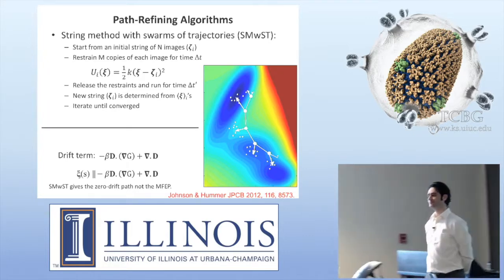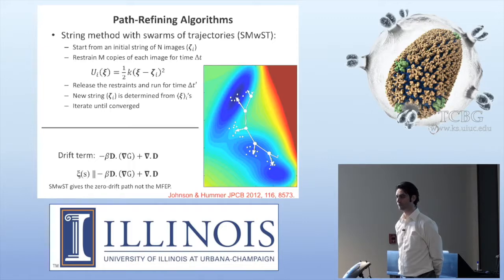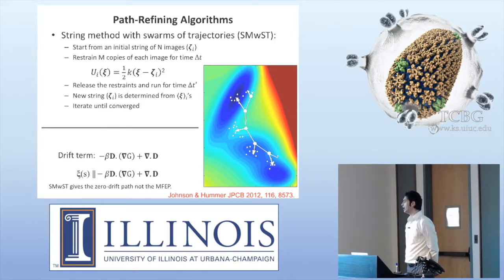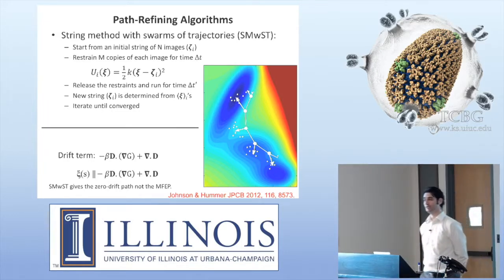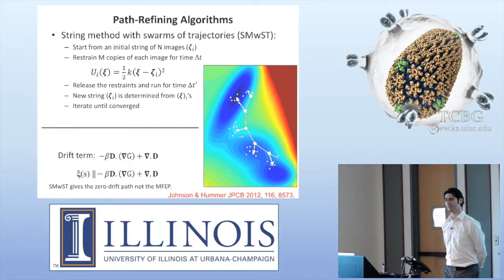Whether it's the most interesting path, the most probable path, or the minimum free energy path — if you look at the potential of mean force calculated along this path, at the top of the barrier you should get one path, you should see isocommittor surfaces. But I actually argue that you wouldn't, if you are using the string method with swarms. I can show that you wouldn't get the isocommittor surfaces, because it doesn't give you the minimum free energy path.